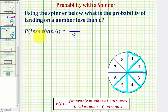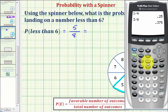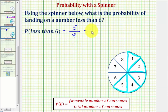Which means the probability of landing on a number less than six is five-eighths. Let's also show the probability as a decimal and percentage. To convert five-eighths to a decimal, we divide. Five divided by eight is equal to 0.625.